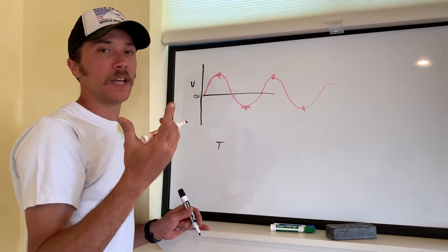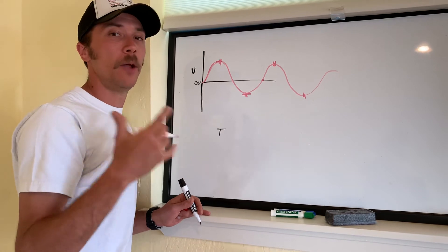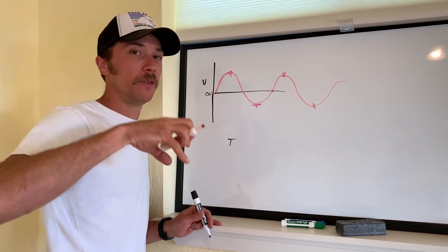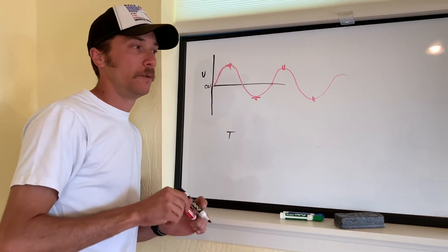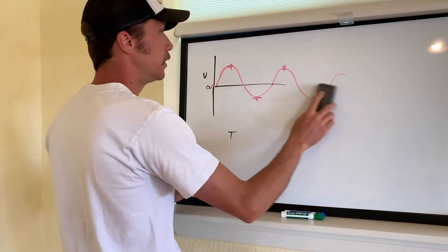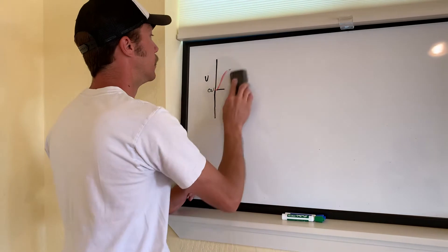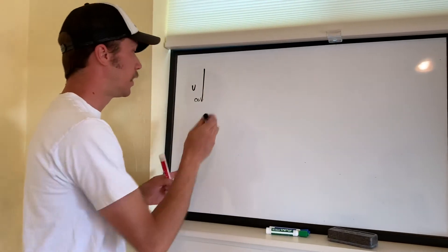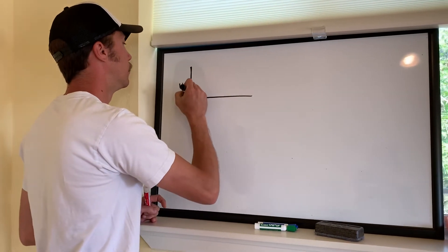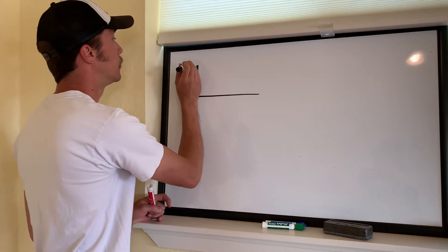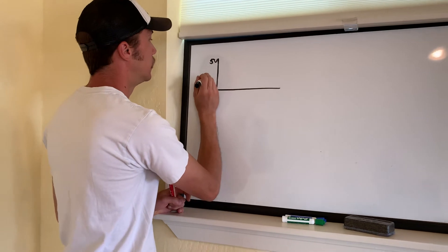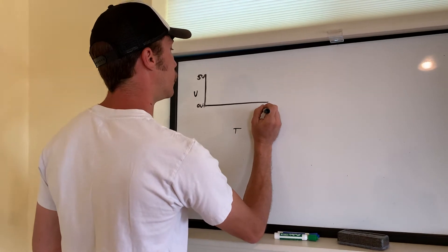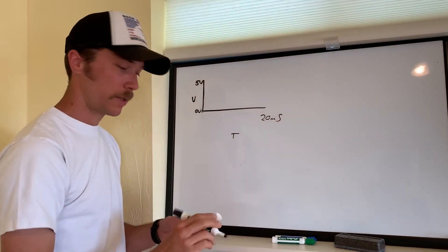Fluorescent lighting cycles at 60 hertz per second — we can't see that, but if you filmed it in slow motion it would be pulsing very fast. Now let's set aside frequency and amplitude and talk about duty cycle. If I take that zero volts baseline and keep it positive, I'll run a voltage over time — let's say 5 volts maximum and 0 volts minimum, over a span of 20 milliseconds.